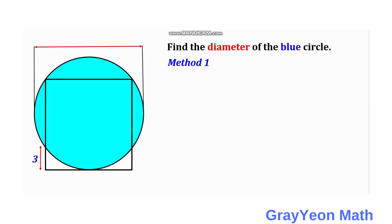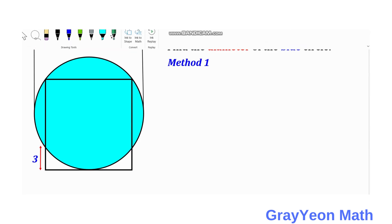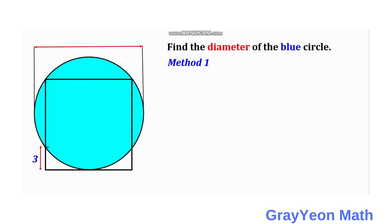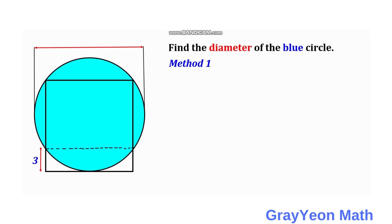For our first method, we are going to use similarity of triangles. But before that, we need to draw a line from the point of intersection of the circle and the square on the left to the right portion, which is also the intersection of the circle and the square. Next, we draw a vertical line from the point where the square and the circle are tangent, upwards.